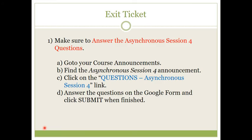That concludes today's asynchronous session. For your exit ticket, make sure to answer the asynchronous session 4 questions. Go to your course announcements, find the asynchronous session 4 announcement, click on the questions link, answer the questions on the Google Form, and click Submit when finished.